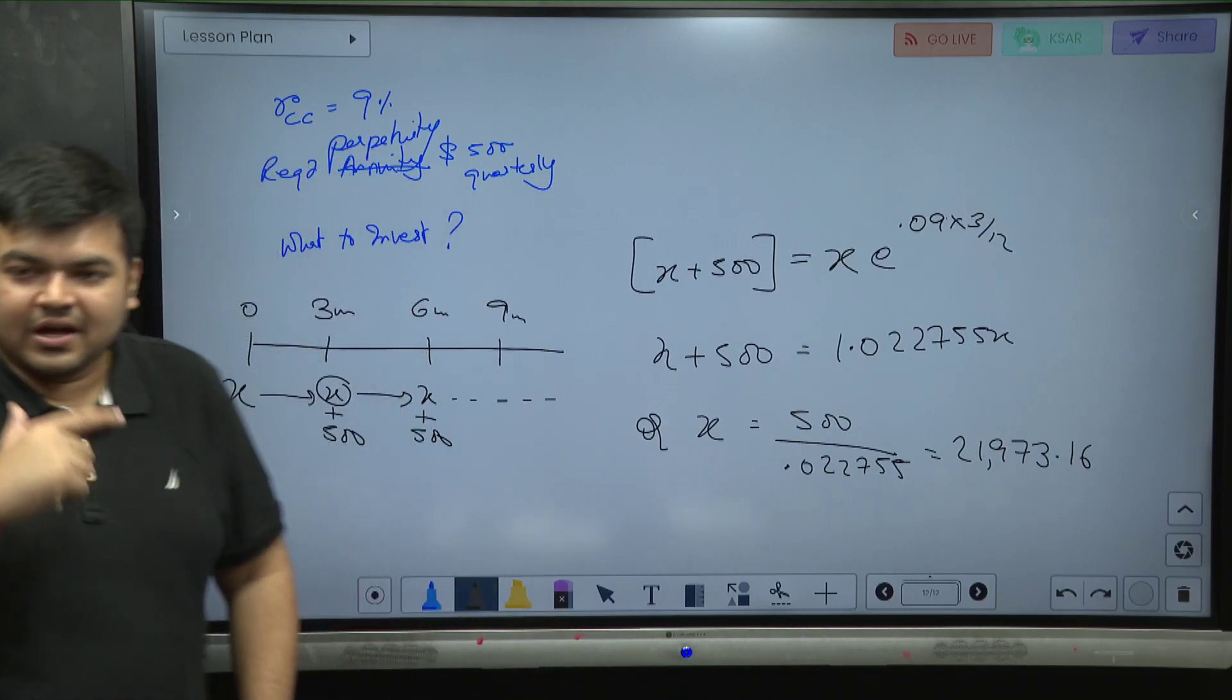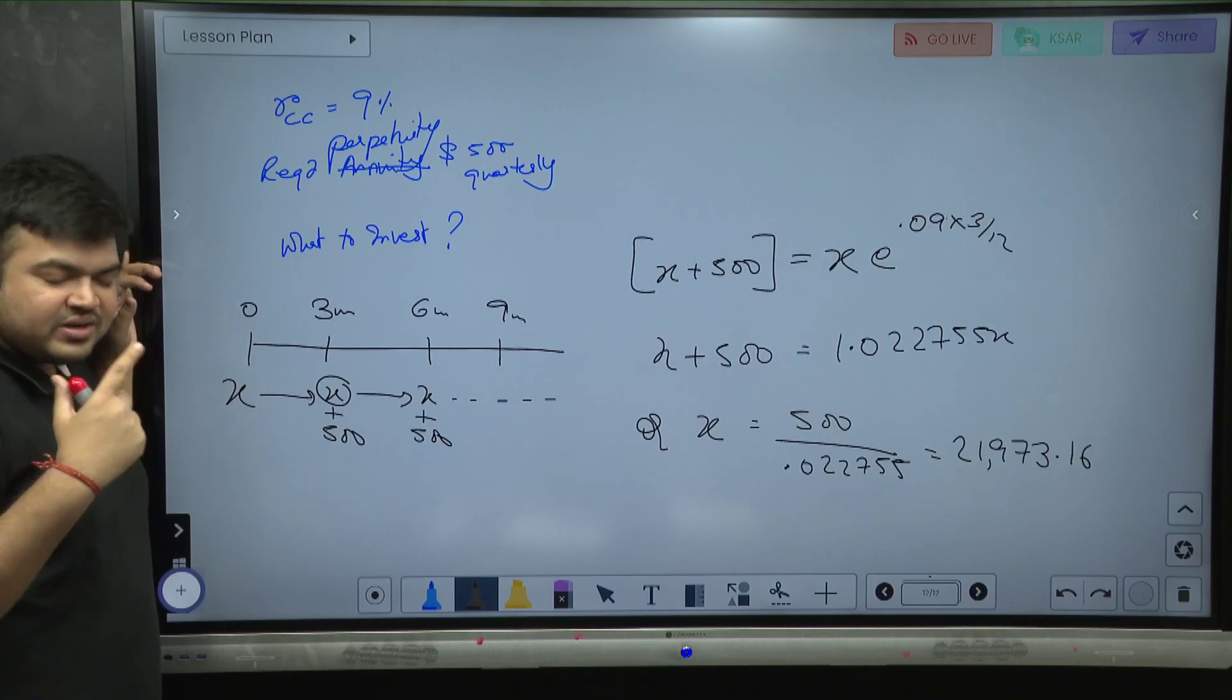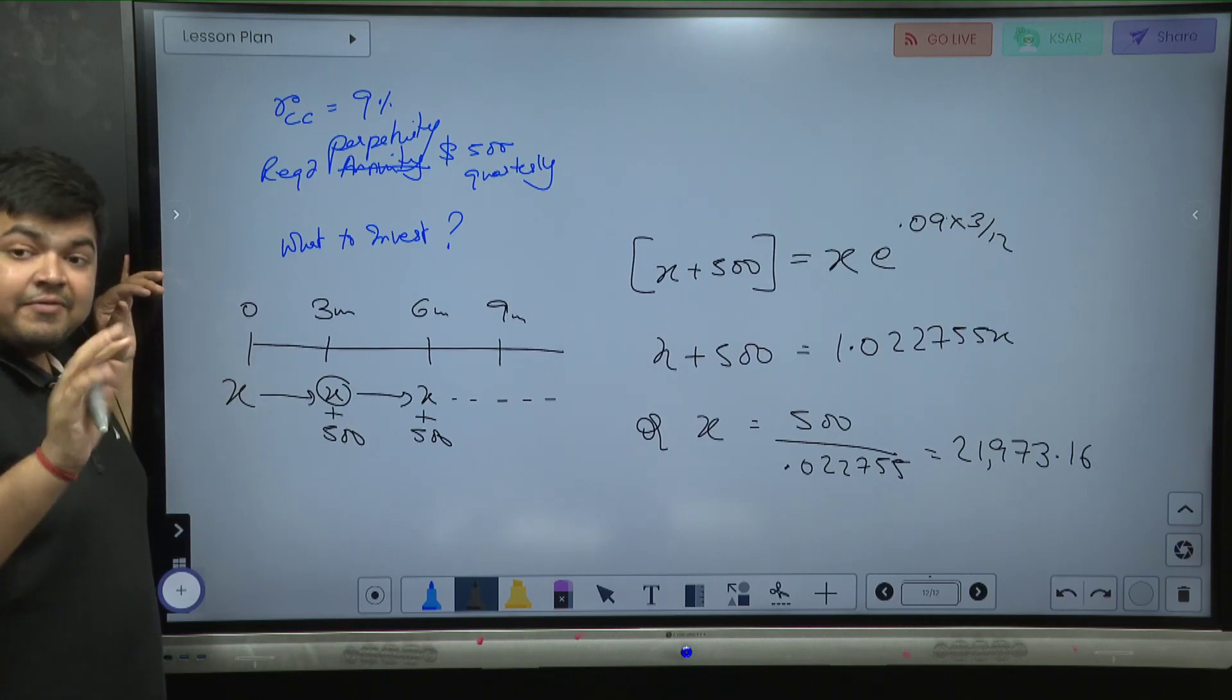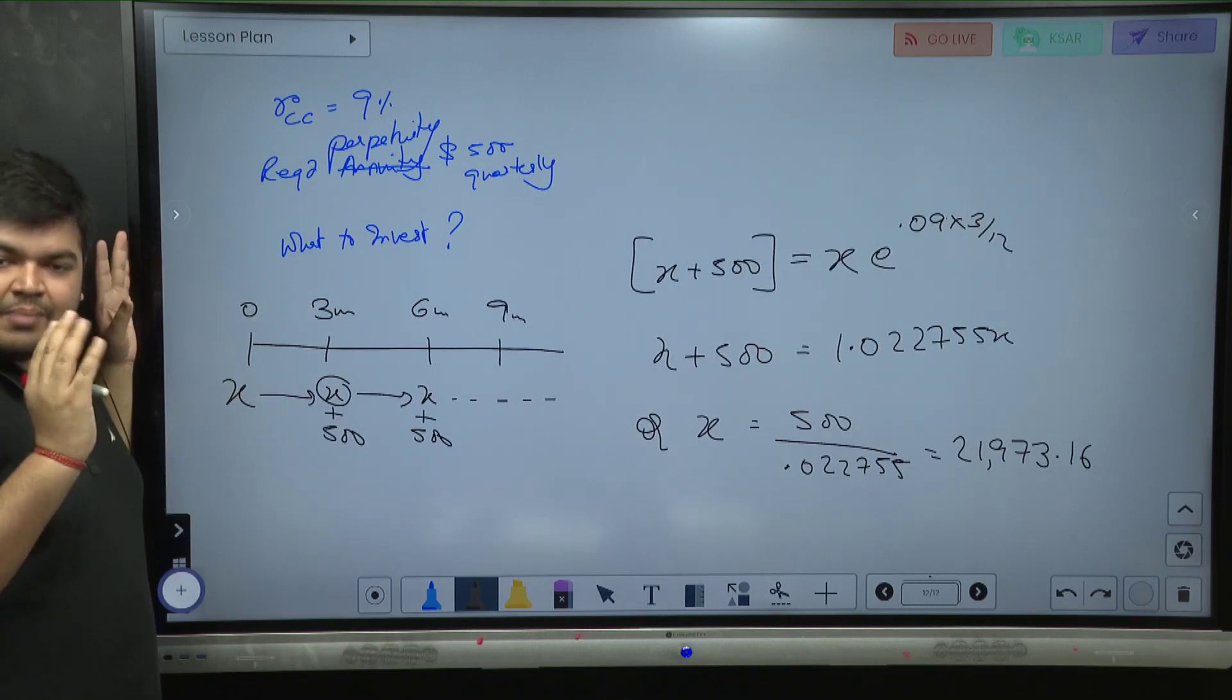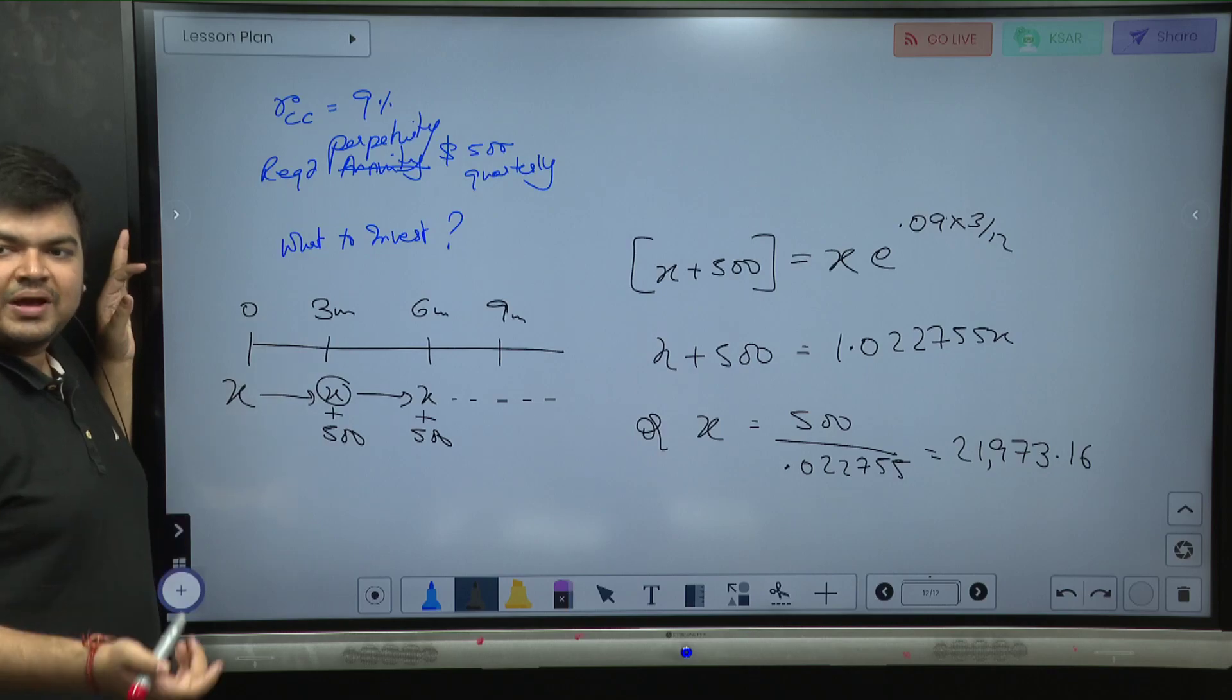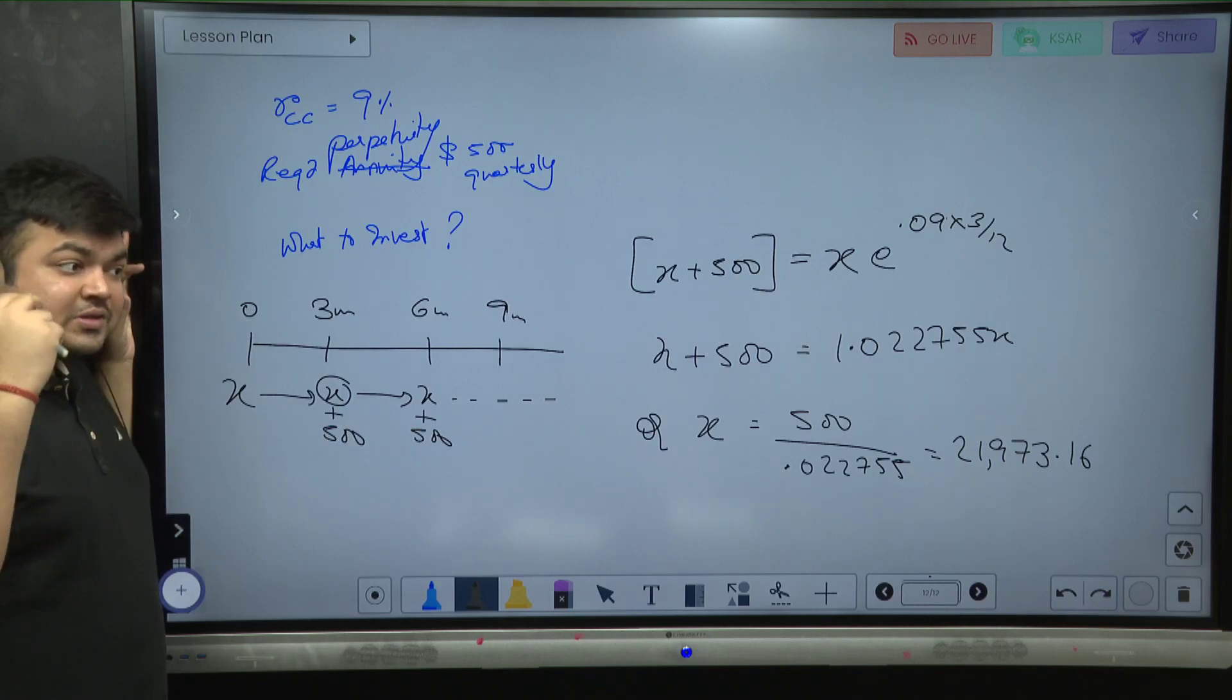22,000 - the answer has to be somewhere close to 22,000. Even if you do not understand continuous rates and all, you should be able to answer that. I'm getting 500 four times a year, so on a per annum basis I'm needing 2000 dollars. If I'm ignoring any kind of continuous rate compounding, I'm doing a very rough calculation. You need 2000 per annum, right? So 9% of something has to be 2000. So 2000 by 9% is 22,000.